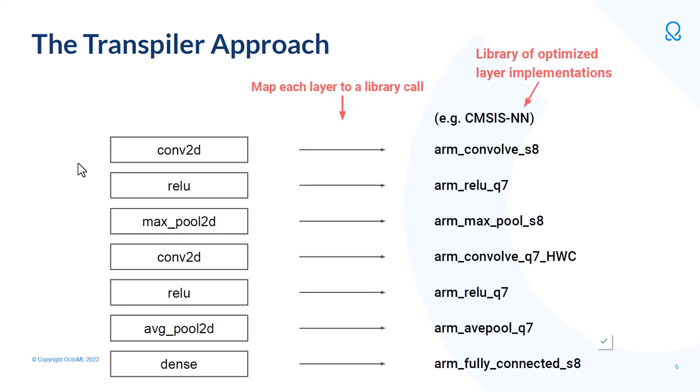How can we do this? Let's consider a simple approach. What if we start with a library of hand-optimized layer implementations? If we had that, we could step through each layer in the model and map each layer to a call into that library. By calling these library functions in the order that the layers present themselves in the model, we can implement a model on a device. This works pretty well for single-core systems.